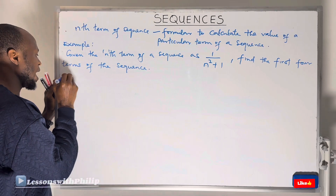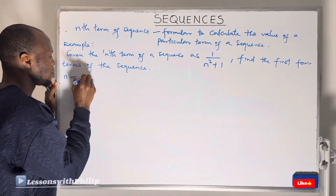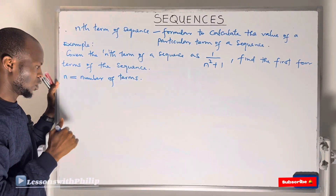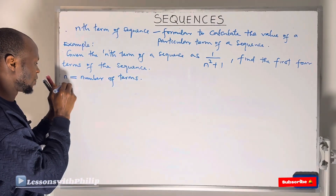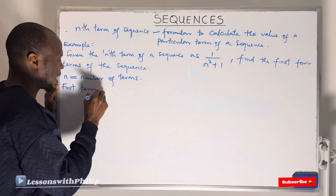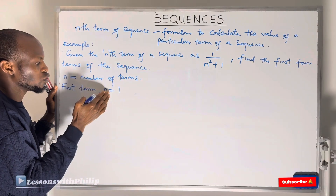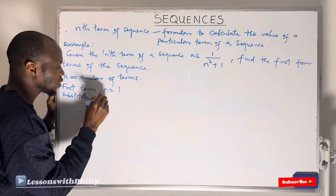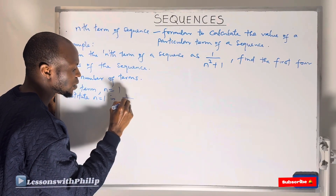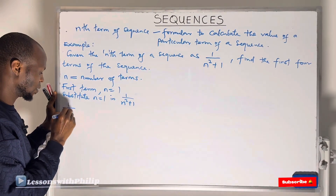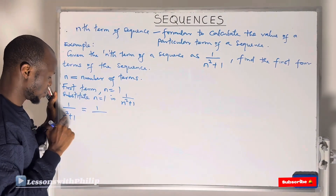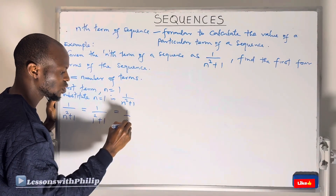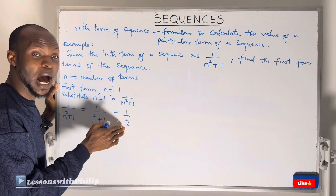Since the nth term formula is 1 over (N² + 1), in sequences N refers to the number of the term. For the first term, N = 1. Substituting N = 1 into the formula: 1 over (1² + 1) = 1 over (1 + 1) = 1 over 2. So the first term is 1/2.